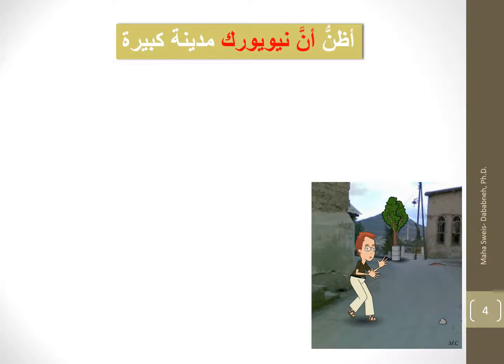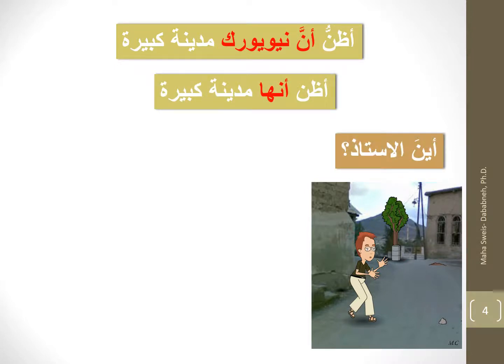Let's do more examples. أظنّ أنّ نيويورك مدينة كبيرة. أظنّ أنّها مدينة كبيرة. So again, the verb أظنّ could follow by a pronoun or by a noun. أظنّ أنّ نيويورك — here it is followed by a noun. أظنّ أنّها مدينة كبيرة — why أنّها? Because مدينة is feminine, that's why we use the suffix ها.